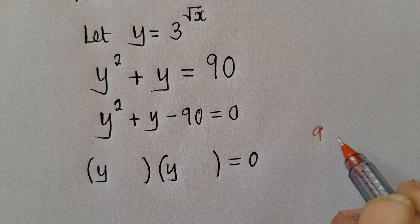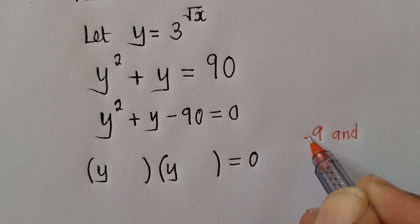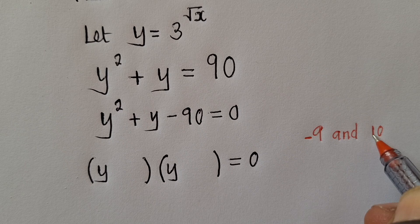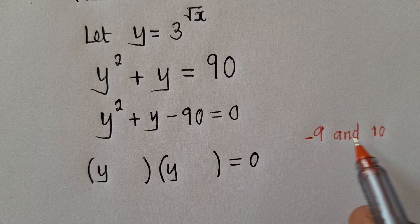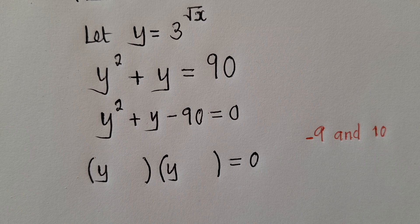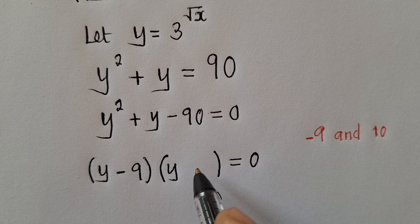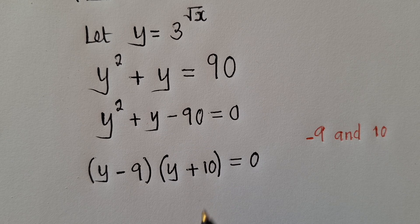Of course, they are negative 9 and 10. Okay, because when you multiply these, you're getting 90. When you add them, you're getting 1. So we can write them here. So this is how it looks.